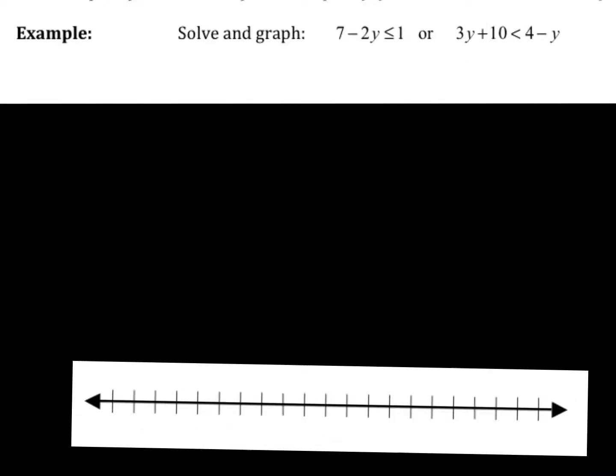So for an or inequality, they're completely two different inequalities just joined together in a sentence with the word or. So you just literally solve them both separately, but put them on the same graph.